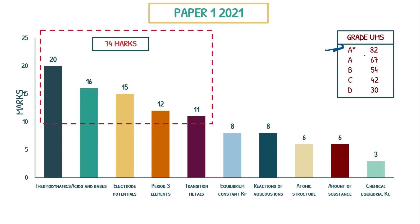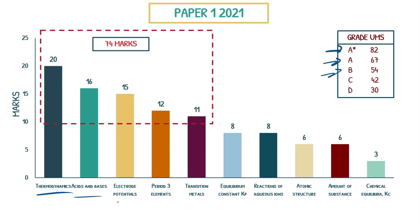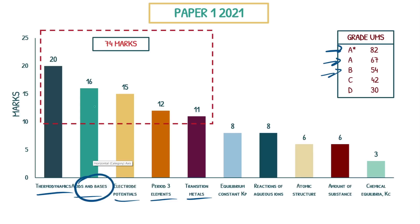2021 is getting even harder — the A star is only 82 marks, A was 67, B was 54. The highest marks were allocated to: thermodynamics again, acids and bases again, electrode potentials had a lot of marks this paper. Period three, and in organics: halogens, period three, and transition metals are the three most common ones. Thermodynamics had 20 marks — that is mental. Acids and bases also really high. Amount of substance, even though only six marks here, is built upon in other topics — you need to understand your calculations and rearranging equations.